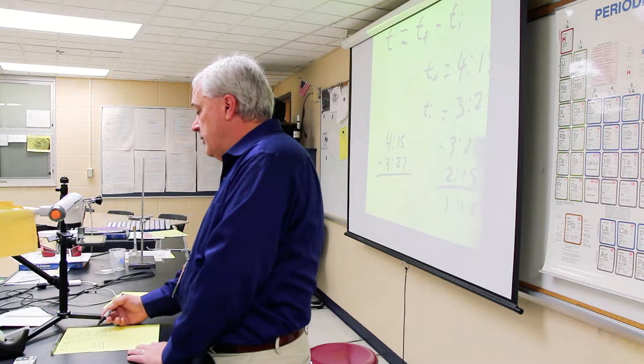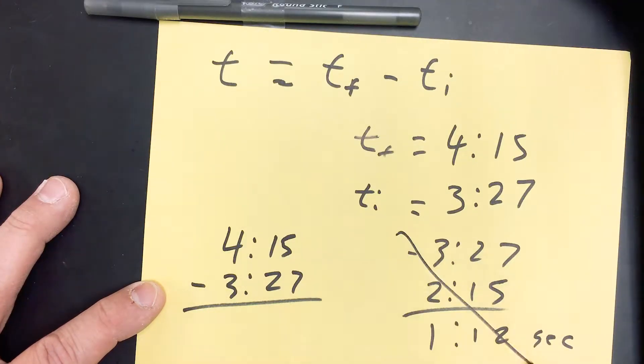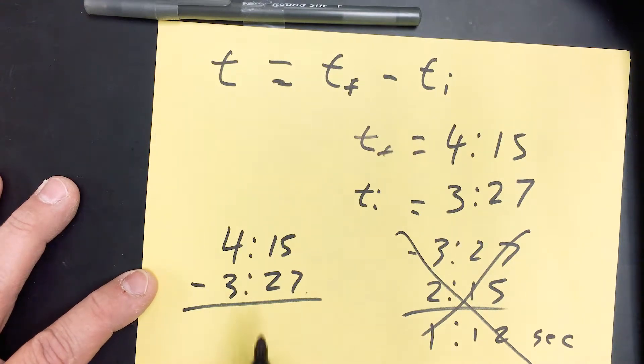That was easy because there was no borrowing involved. In this case, in the case that we're trying to do, we have 5 minus 7 and 1 minus 2. We're going to have to borrow. We're going to have to borrow twice.